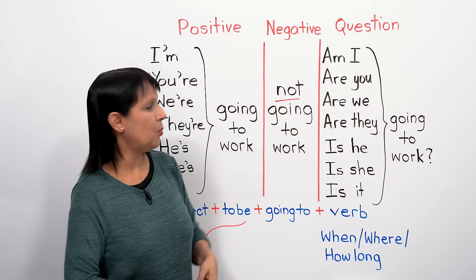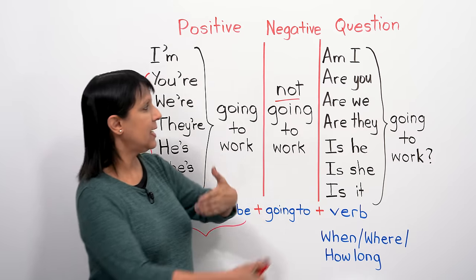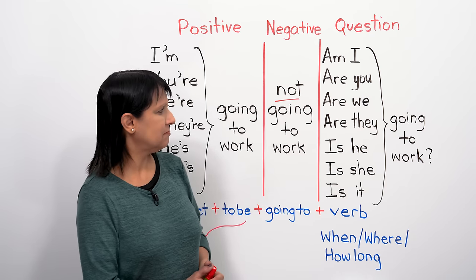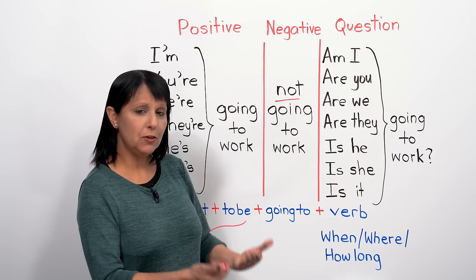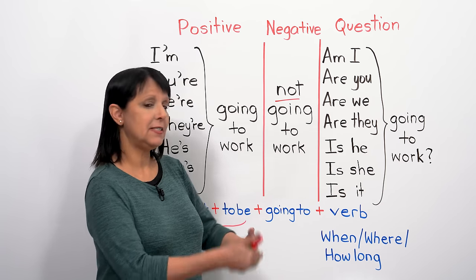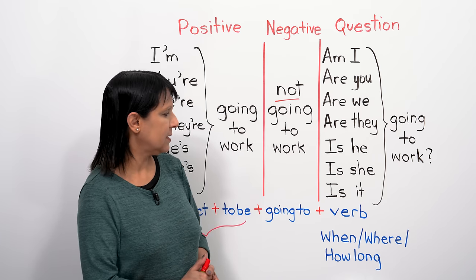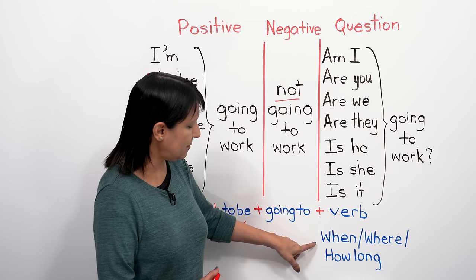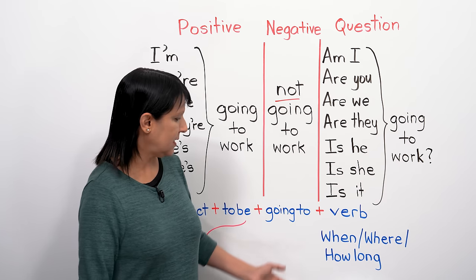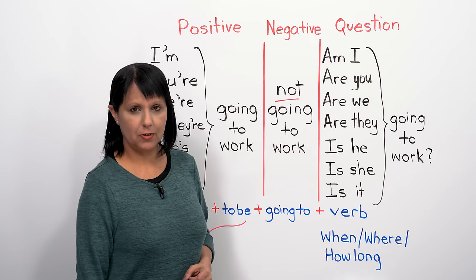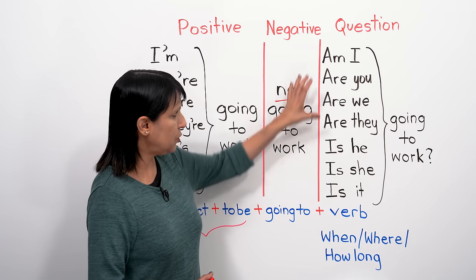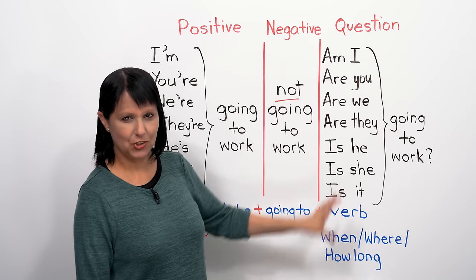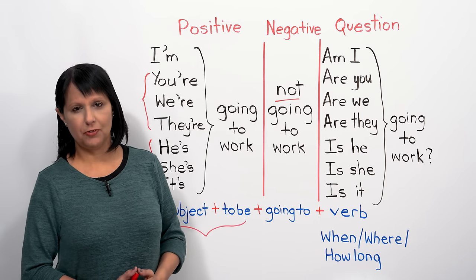If you have a question, we change the order — we reverse it. Instead of 'I am,' we say 'am I?' and now we see the full form of the verb 'to be' — no contractions in questions. Am I going to work tomorrow? Are you going to work tomorrow? Are we going to work? Are they going to work? Is he going to work? Is she going to work? Is it going to work? You can also add a question word before: 'When are you going to work?' 'Where are you going to work?' Just keep the same construction.